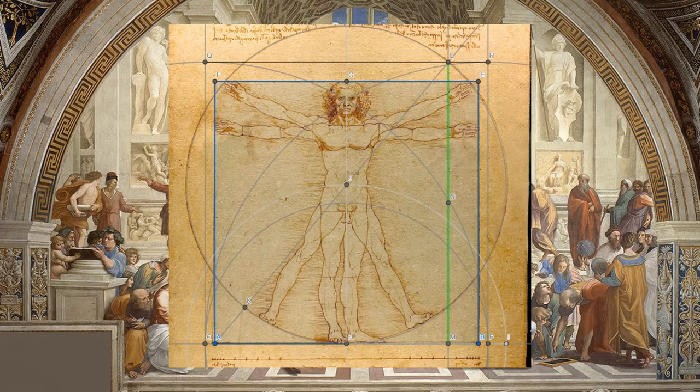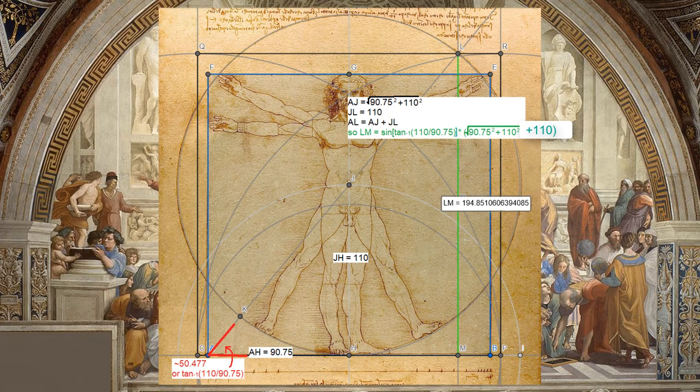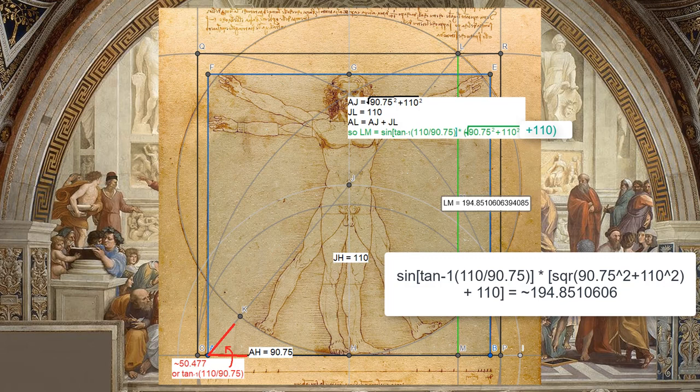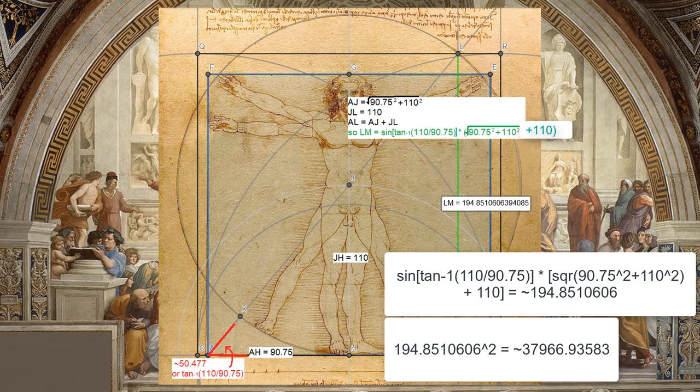We can use trigonometry to find the value of the green line. This equals about 194.851, which means the area of the square will be 37,966.936, compared to the 38,013.271 area of da Vinci's circle.